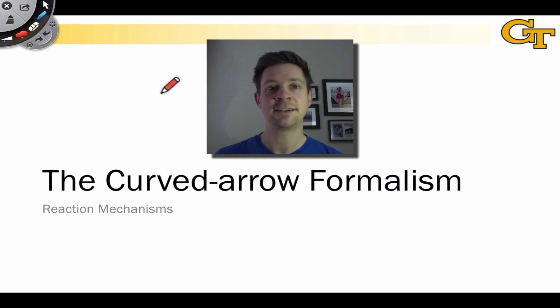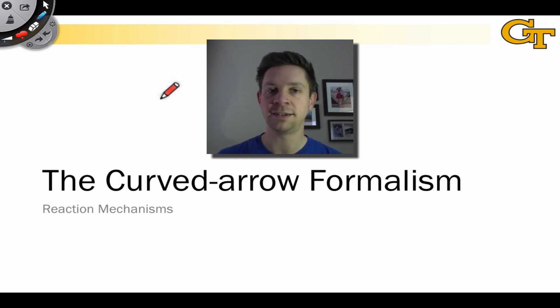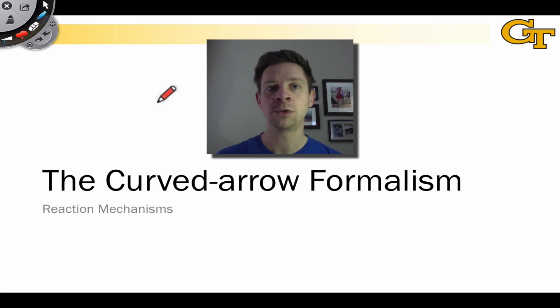The last lesson gave us a taste of mechanistic reasoning in the relatively simple context of proton transfer. In this lesson, we're going to focus on the curved arrow formalism, which is a way of showing electron flow in reaction mechanisms.